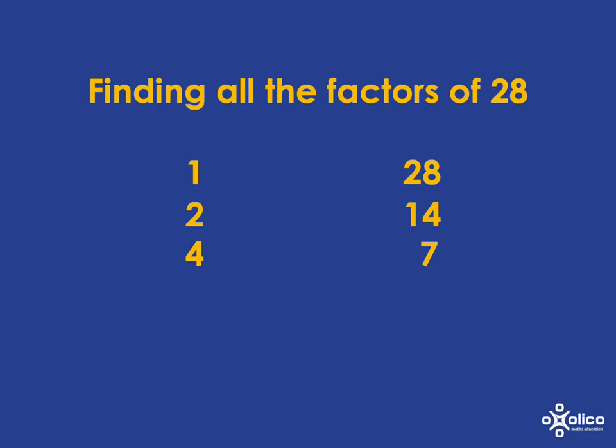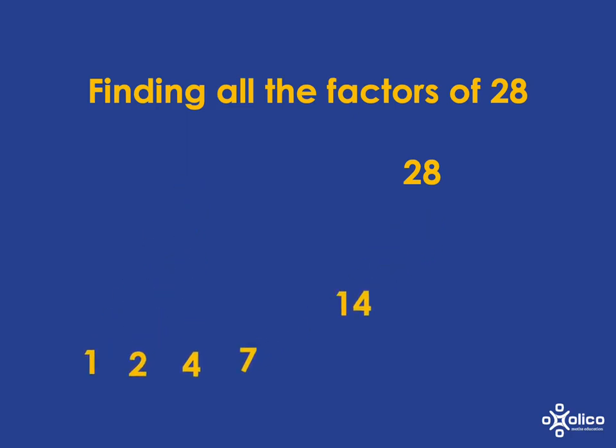It's very important to get them in their partner pairs so you won't forget any factors. If you want to write them in order, you can then just put them down: 1, 2, 4, 7, 14, and 28 — all the factors of 28.